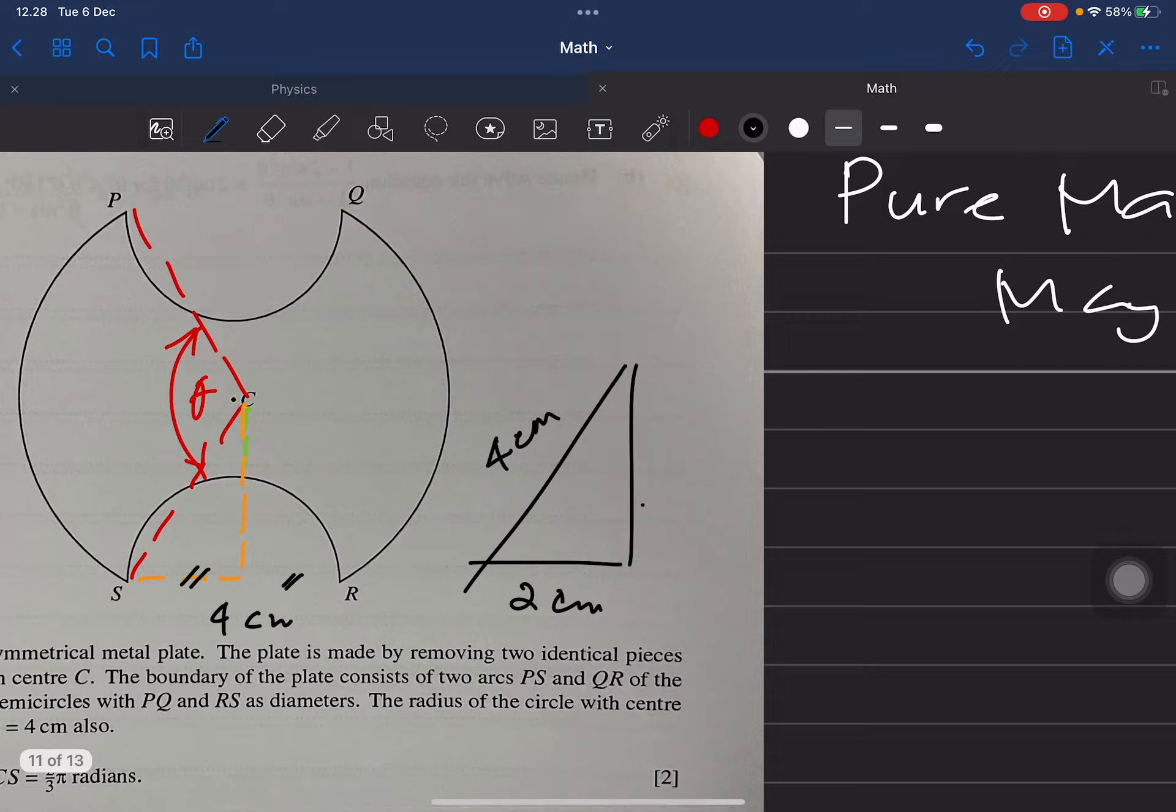And when we put this angle here as alpha, let's say we have sine alpha as 2 over 4, or a half. So alpha is 30 degrees here. So from this, this is 30 degrees here, this 30 degrees also, this is 30 degrees.